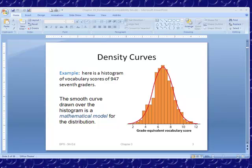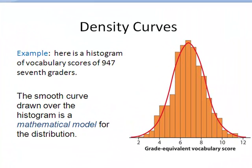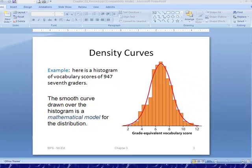Here's an example. This is a histogram of vocabulary scores of 947 seventh graders. The smooth curve drawn over that histogram is a mathematical model for the distribution. It's not a perfect fit, but it's an awful good fit. We want to model our data with these mathematical models, and if we can get a model that we know a lot about, it helps us in doing inferential statistics.